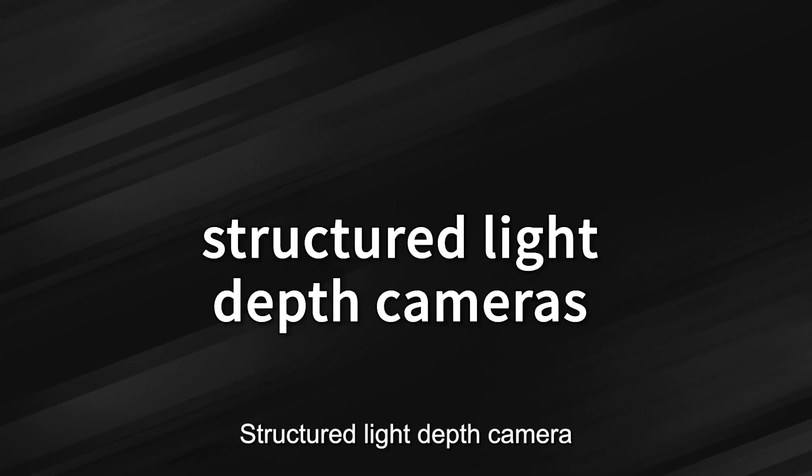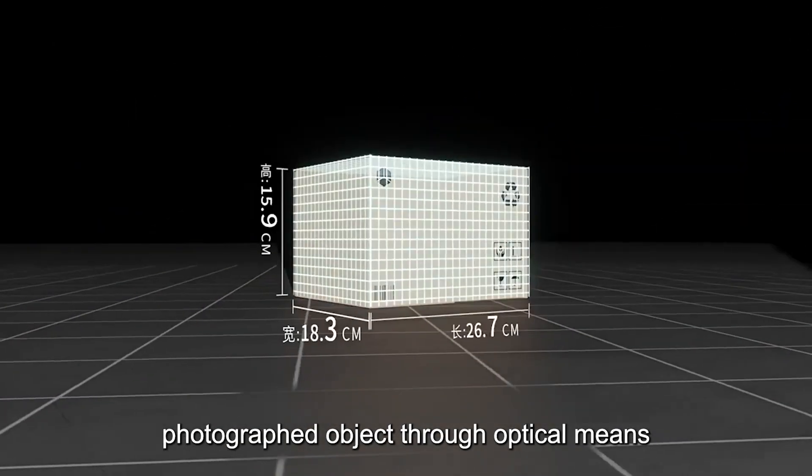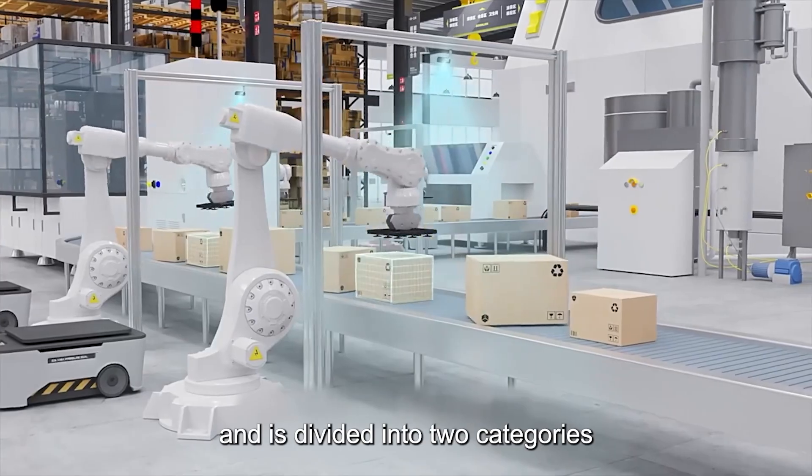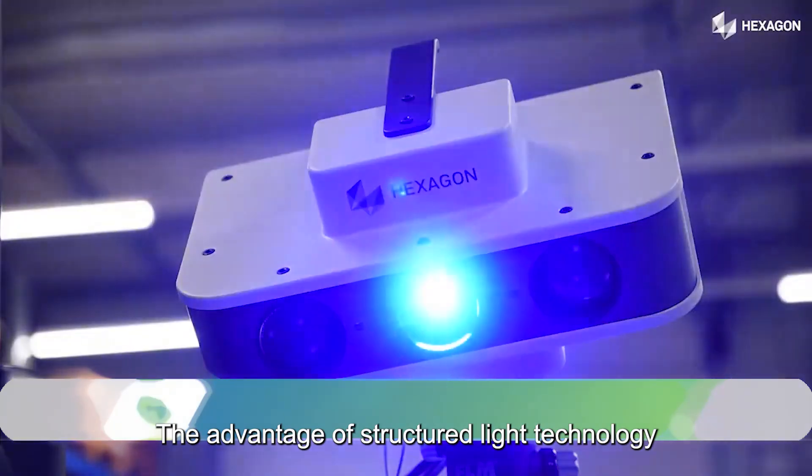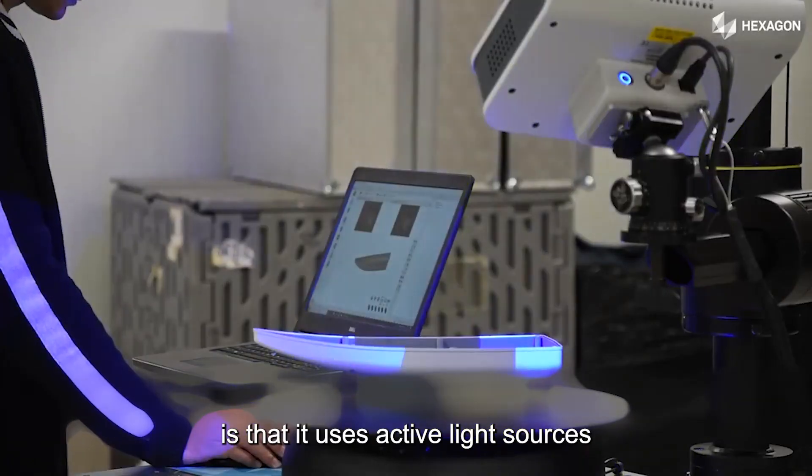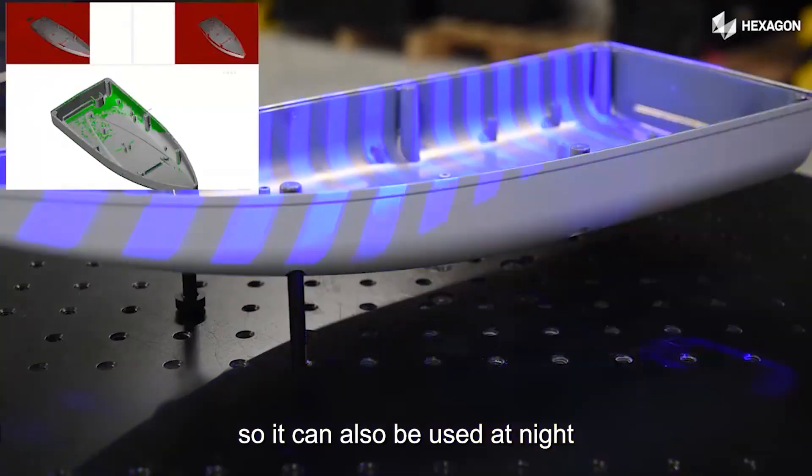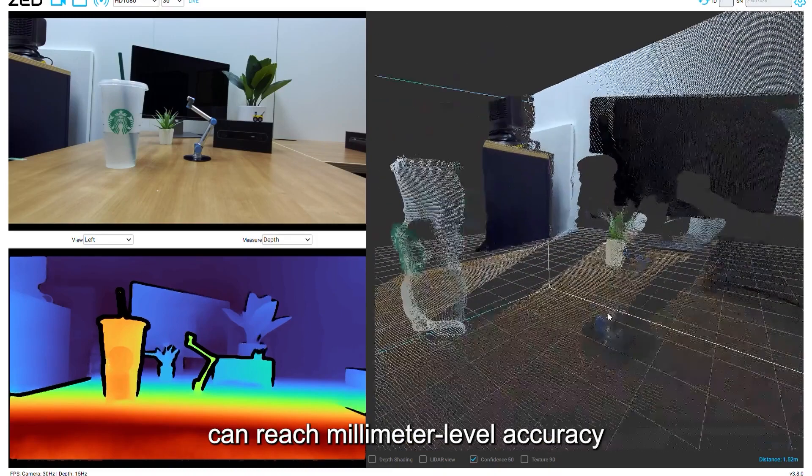Structured light depth camera obtains the 3D structure of the photographed object through optical means, and is divided into two categories: monocular structured light and binocular structured light. The advantage of structured light technology is that it uses active light sources, so it can also be used at night, within one meter.